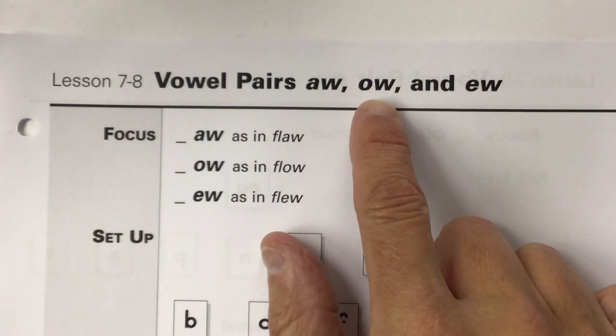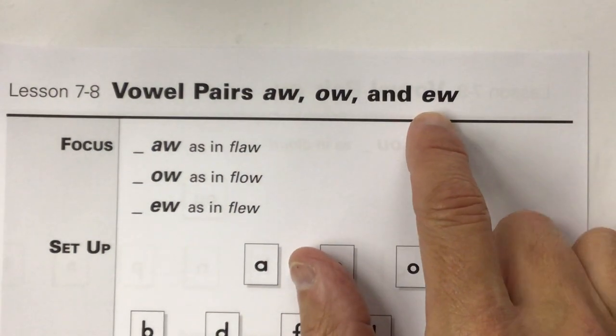O-W says oh, the long O sound. We don't make a W sound at all. And E-W says ooh, like that's disgusting, ooh.